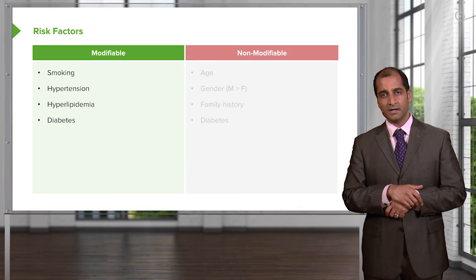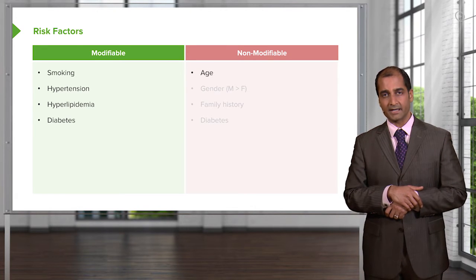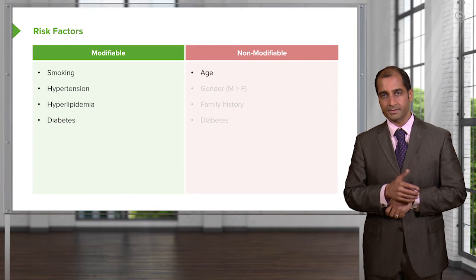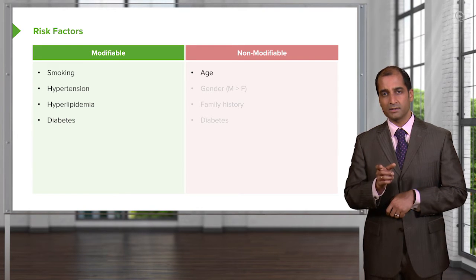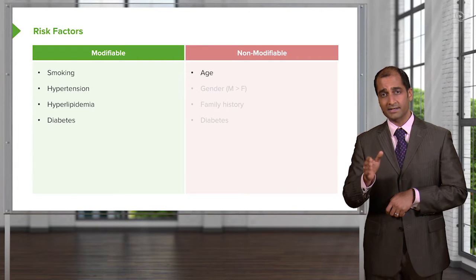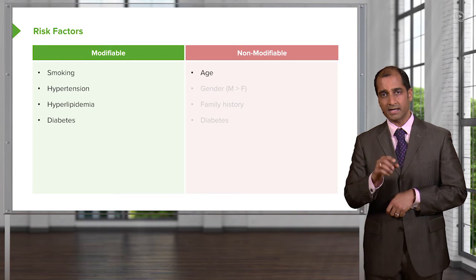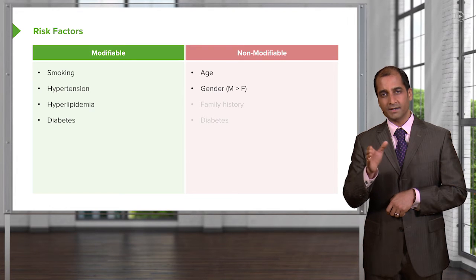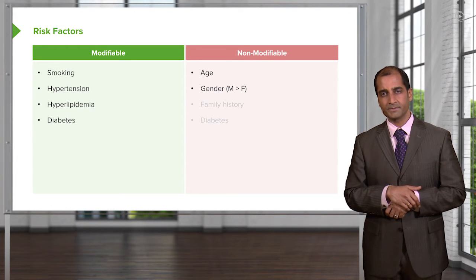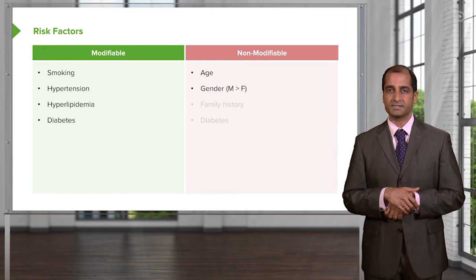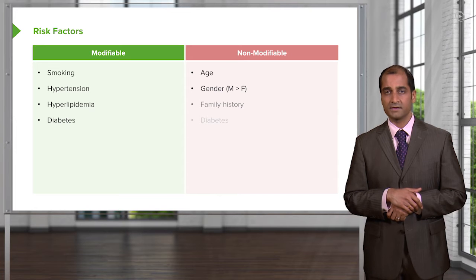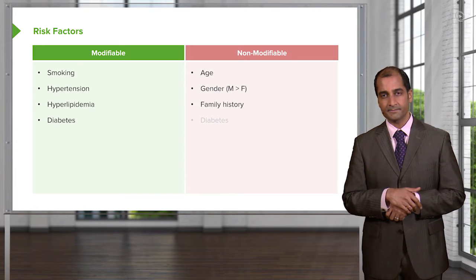What about the non-modifiable? There's nothing you can do about age. As one gets older, there's accumulation of cholesterol, lipids, atherosclerosis. But which patient is at greater risk at a younger age? A male patient — at a younger age, instead of 55, it would be at the age of 45. Why is a female protected against accumulation of lipid? Because of estrogen. Estrogen protects the female against lipid accumulation. Gender — more so males. Family history, you can't help that. And diabetes.